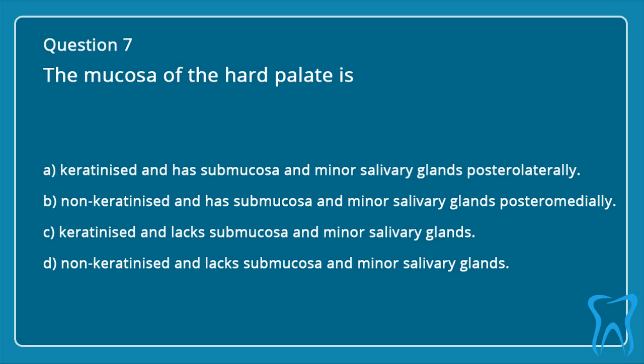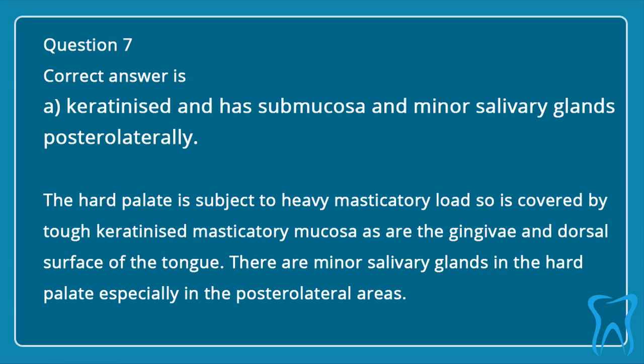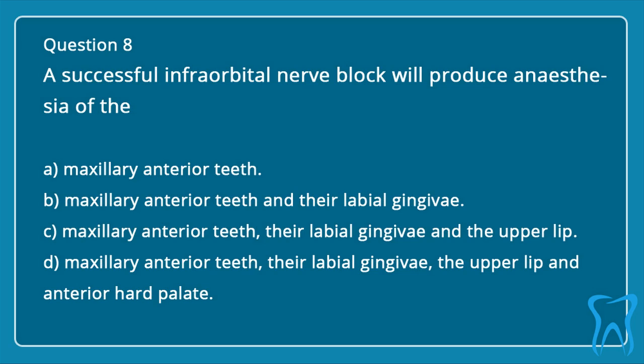Question 7. The mucosa of the hard palate is: A. Keratinized and has submucosa and minor salivary glands posterolaterally. B. Non-keratinized and has submucosa and minor salivary glands posteromedially. C. Keratinized and lacks submucosa and minor salivary glands. D. Non-keratinized and lacks submucosa and minor salivary glands. The correct answer is A: keratinized and has submucosa and minor salivary glands posterolaterally. The hard palate is subject to heavy masticatory load, so it is covered by tough keratinized masticatory mucosa, as are the gingiva and dorsal surface of the tongue. There are minor salivary glands in the hard palate, especially in the posterolateral areas.